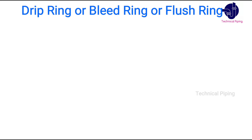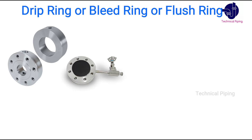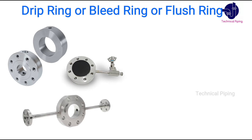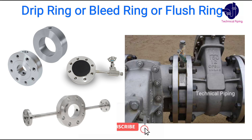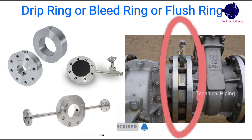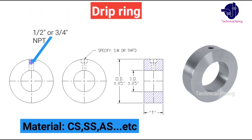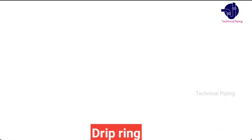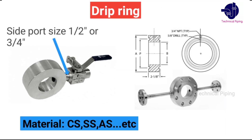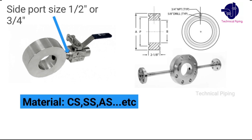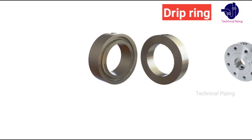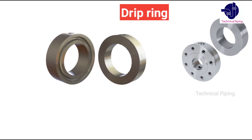The bleed ring is a ring section with one or more radial pipe connections, designed to fit between standard flanges within the bolt circle using conventional gaskets. The bleed ring normally comes with 3/4 inch tapped, or often in socket welded type or threaded type, for connecting with valves and instruments.